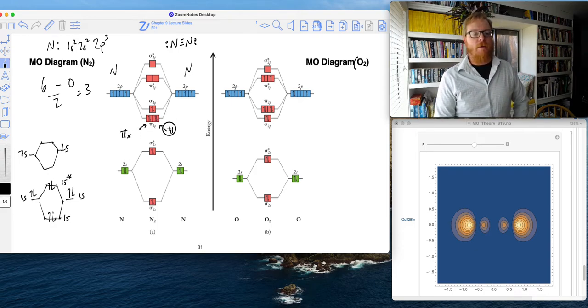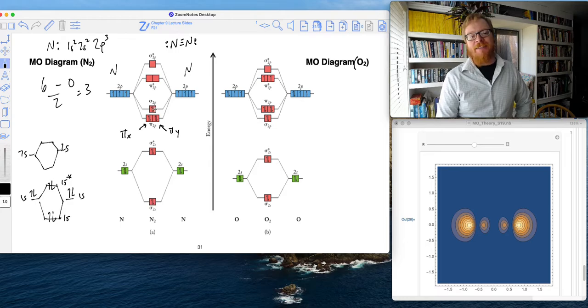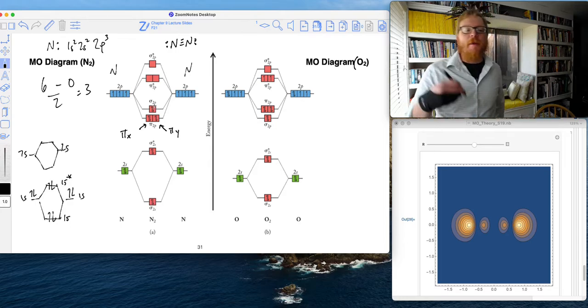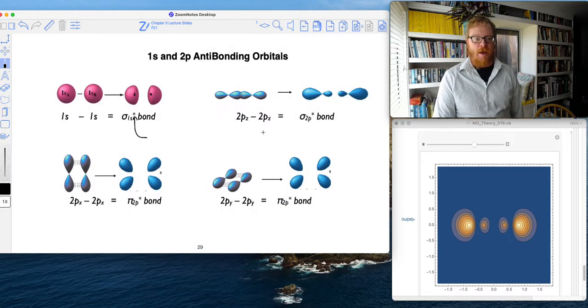And we'd be tempted to say that it's pi Z, but remember, the PZ makes the sigma bond. Let's look at that one more time.